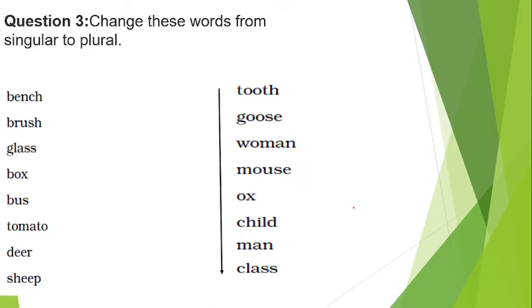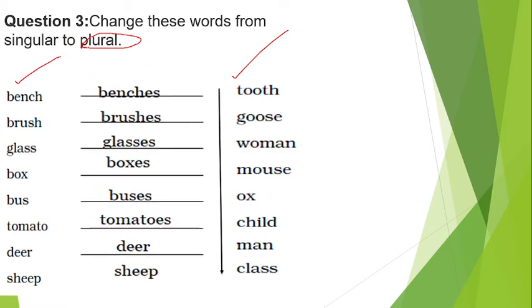Move on to next one. Question 3: Change these words from singular to plural. If you have bench, then it will be benches. Brush becomes brushes, glass becomes glasses, box becomes boxes. I will make a particular video and put it in the description.